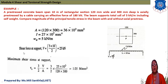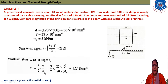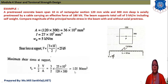Now we find the maximum shear stress at the support. For a rectangular section, tau_v_max = (3/2) × V/A = 1.5 × (25 × 10³) / (120 × 300) = 1.05 N/mm².